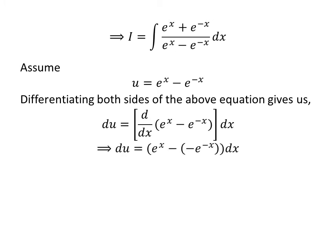The derivative of e^x is e^x, and the derivative of e^(-x) is -e^(-x) by application of the chain rule. So, du is equal to e^x minus (-e^(-x)) times dx. Since minus of minus is plus, du is equal to (e^x + e^(-x)) dx.